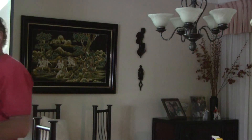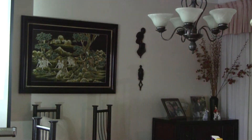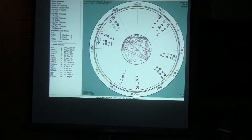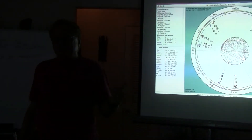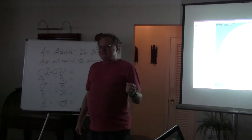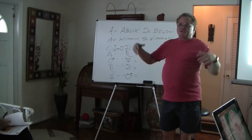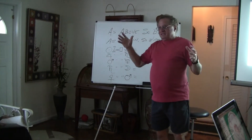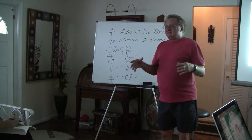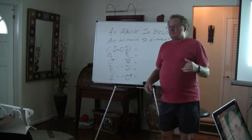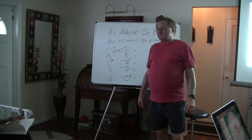Jupiter is optimism; Saturn is pessimism. The earlier question about whether Sun-Moon square is a bipolar aspect — actually bipolar is very often a Jupiter-Saturn conjunction or affliction. The reason is because the battle between depression and optimism is so extreme. The bipolar person is one moment very high and optimistic, and then an hour later may be in great depression.